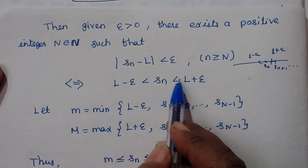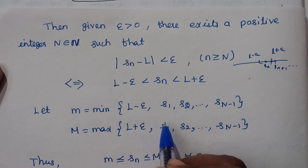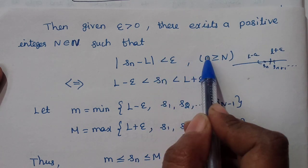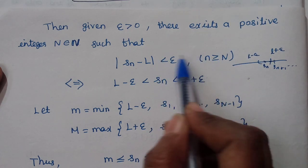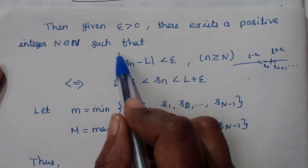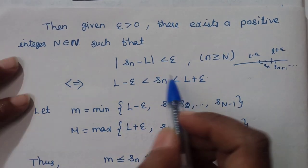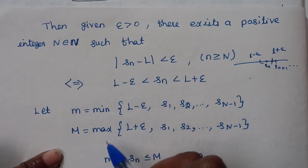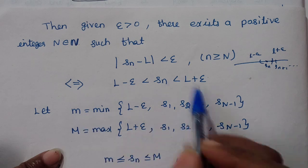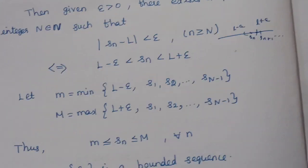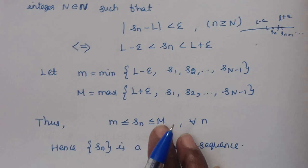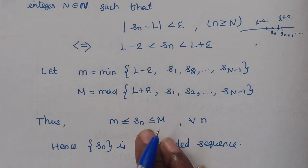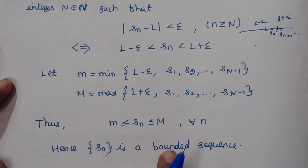The upper bound is the maximum of {S1, S2, ..., S(N-1), L + ε}, which gives capital M. So we have m ≤ Sn ≤ M for all n, satisfying the bounded condition. Hence the sequence {Sn} is bounded. Therefore, convergent sequence implies bounded.